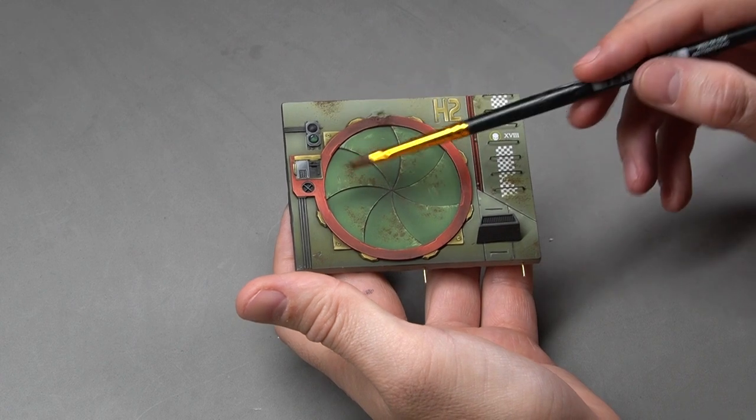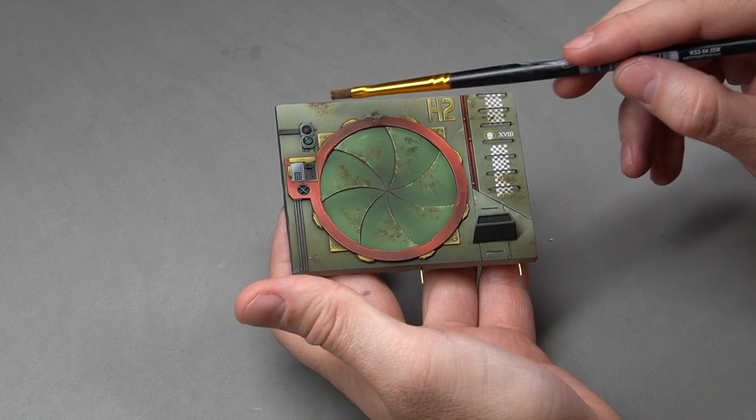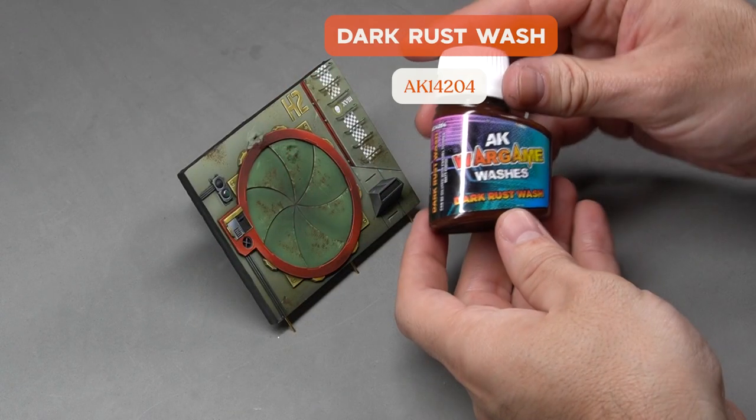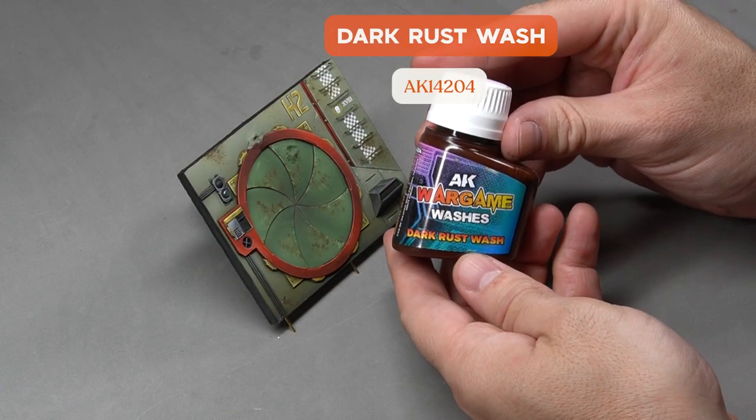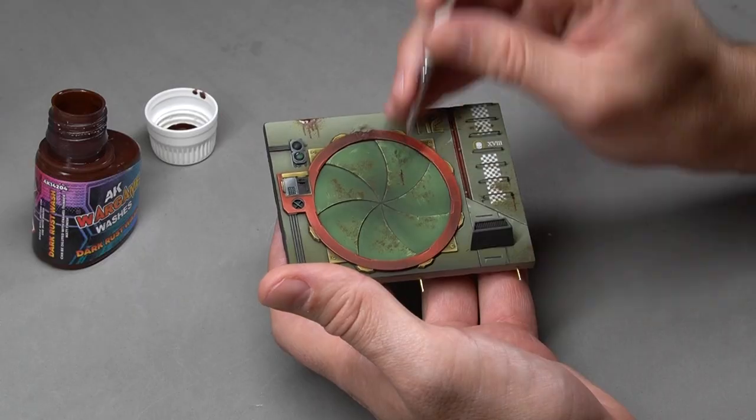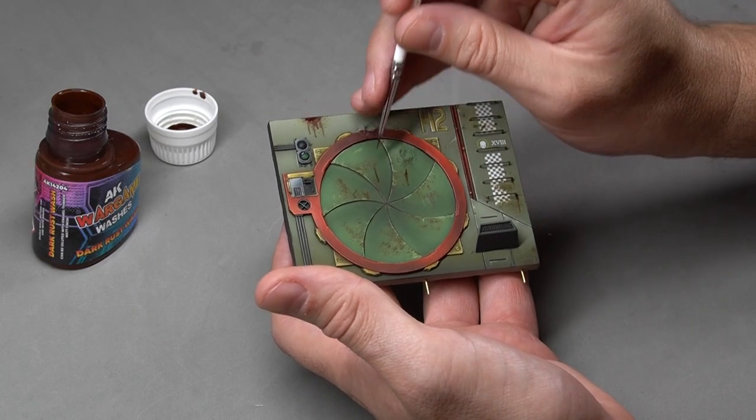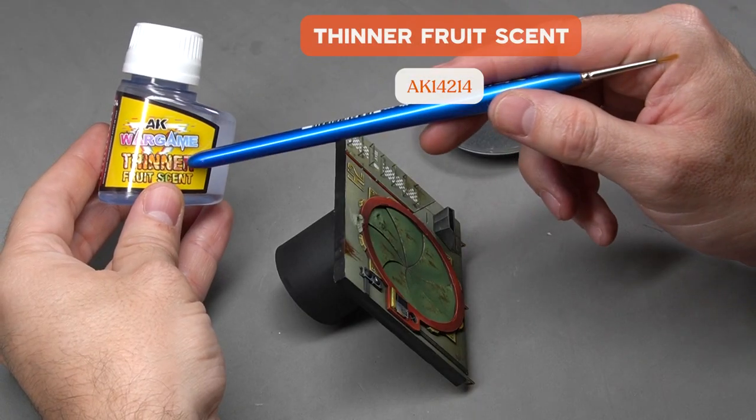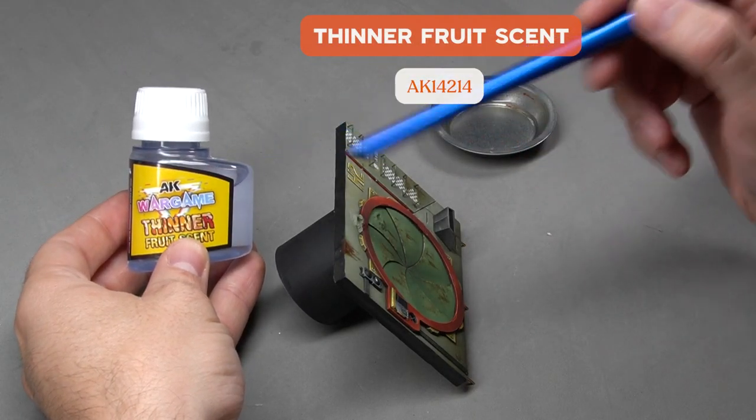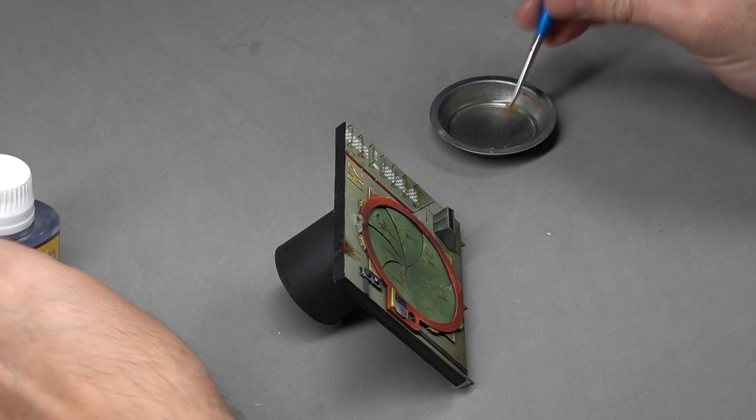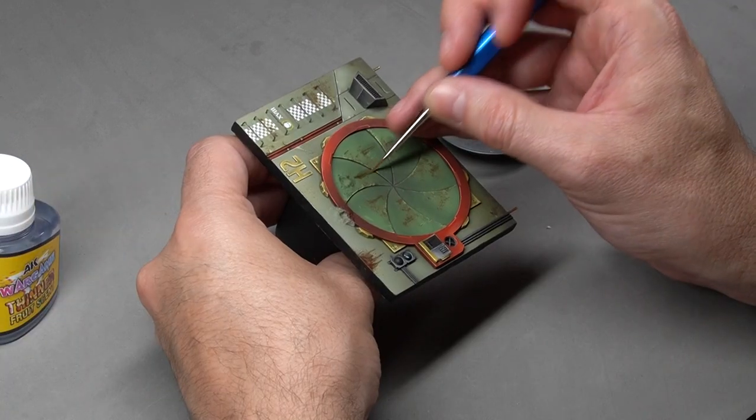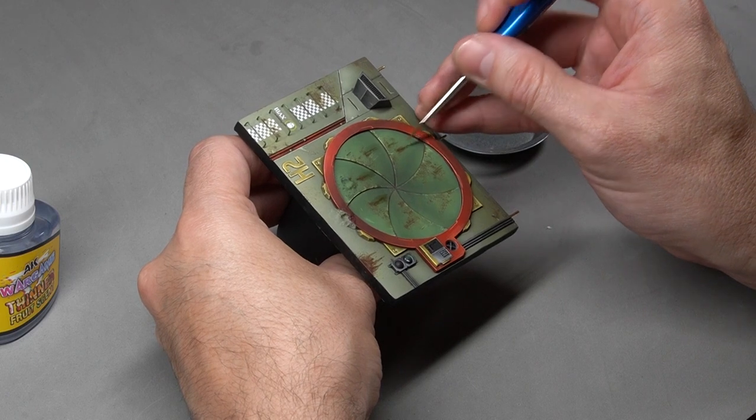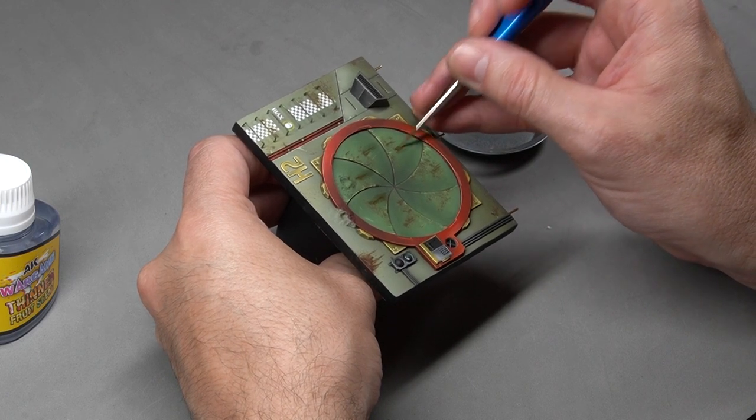Just as we imitated the rust patina, we're going to simulate dripping rust. For this, we'll use dark rust wash. We'll use the thinner to blend the lines we've created. This way each line becomes less evident, and only the dirt dripping down remains.